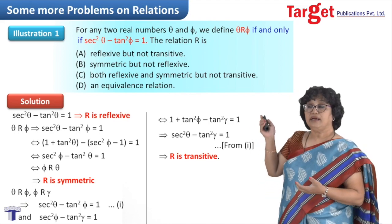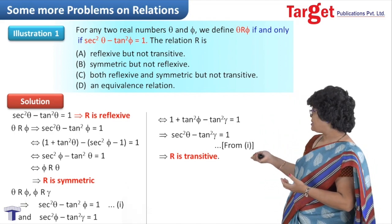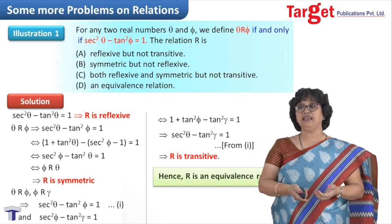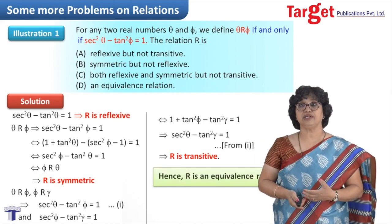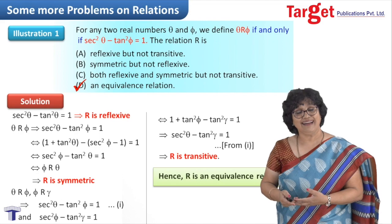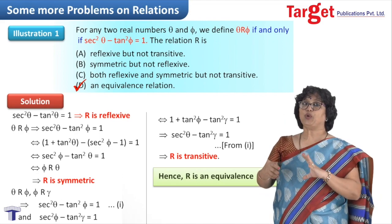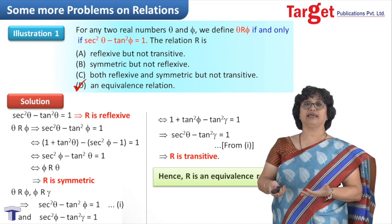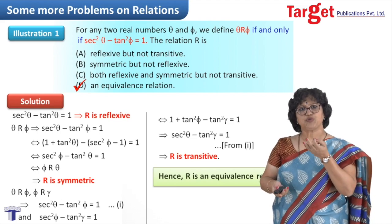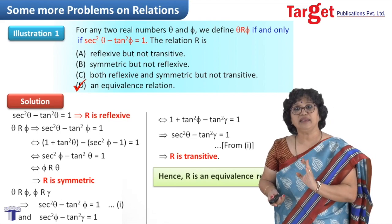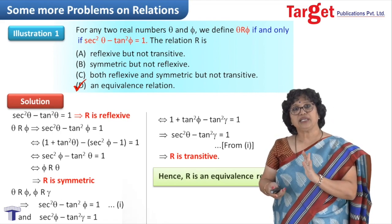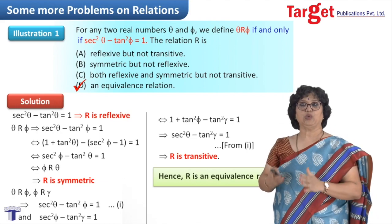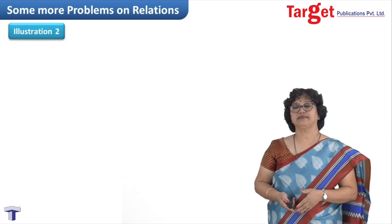So the relation is reflexive, symmetric, and transitive — meaning it is an equivalence relation. The correct option is D. Please do not jump to a conclusion without working through it. Write and scribble those small steps too, make sure you are confident, and then conclude.